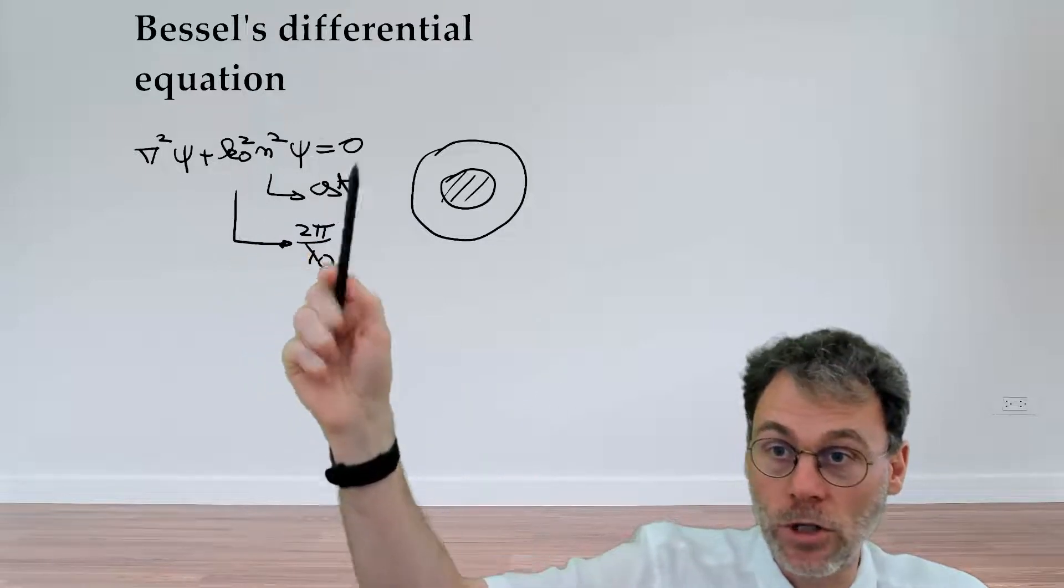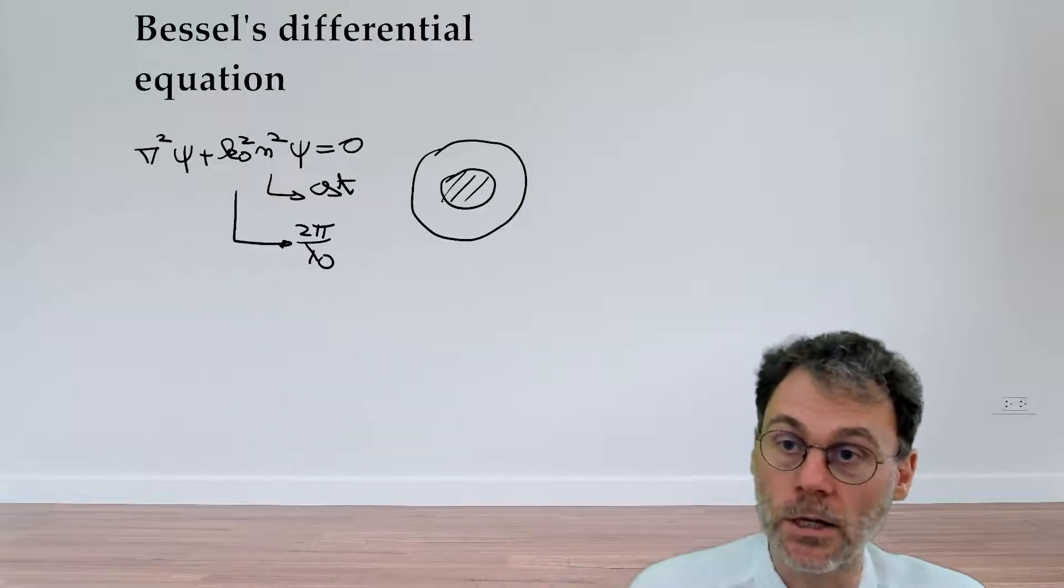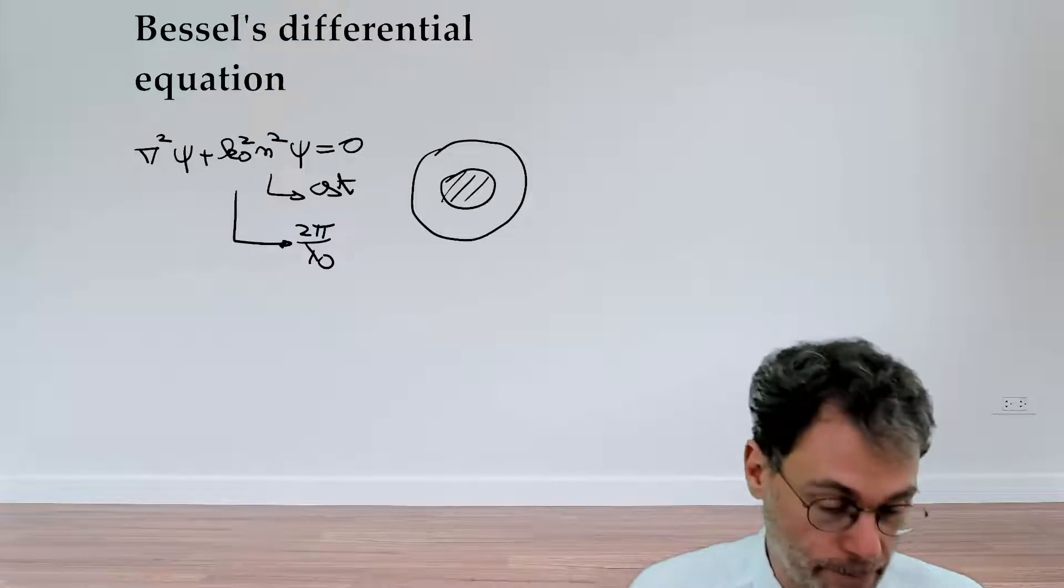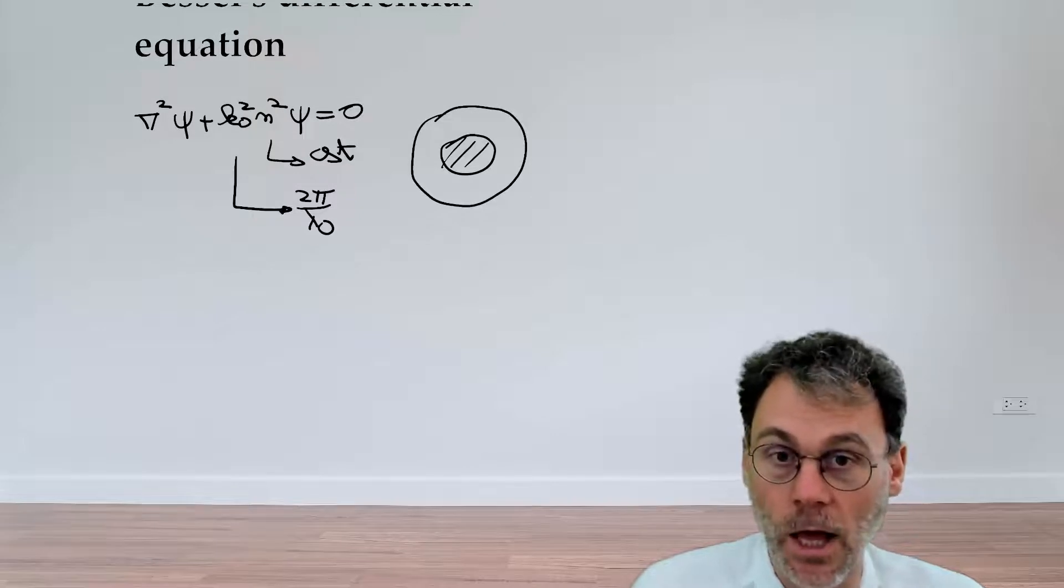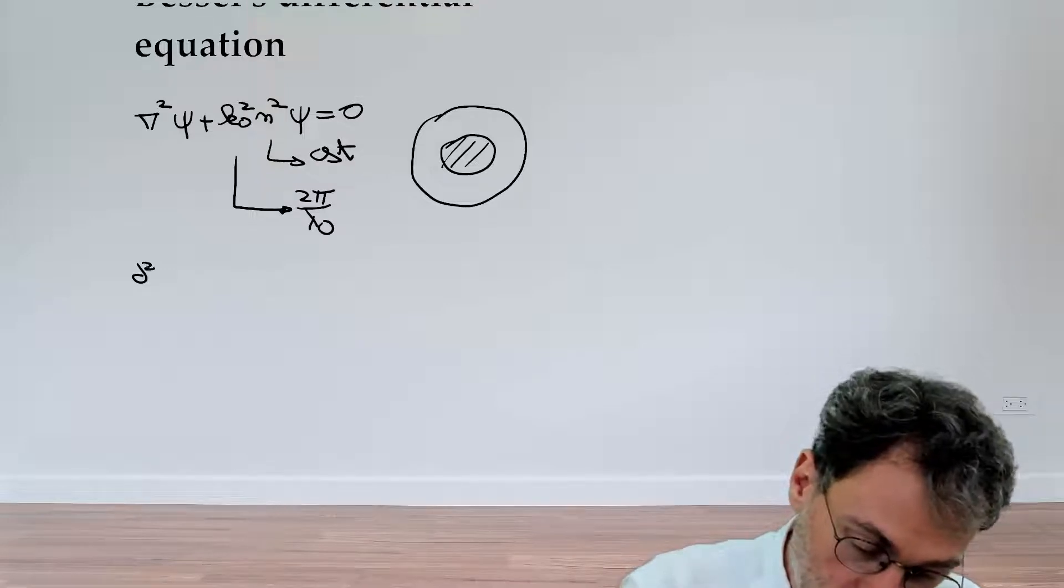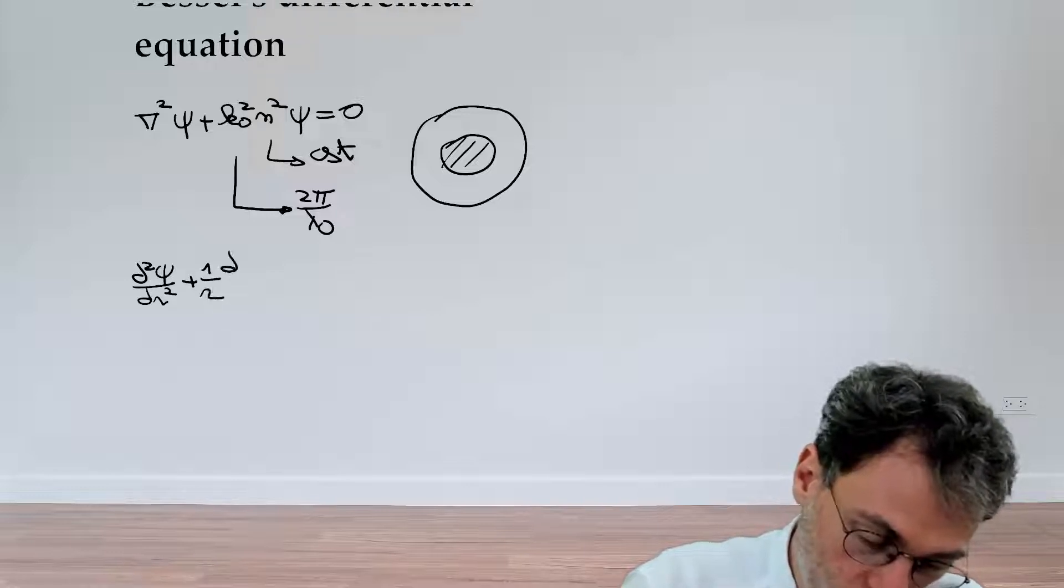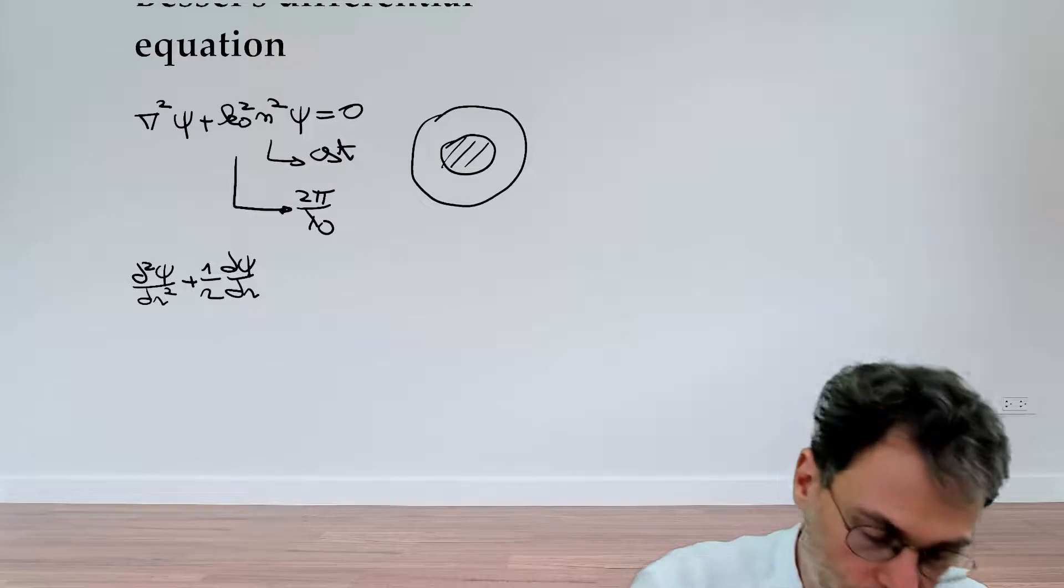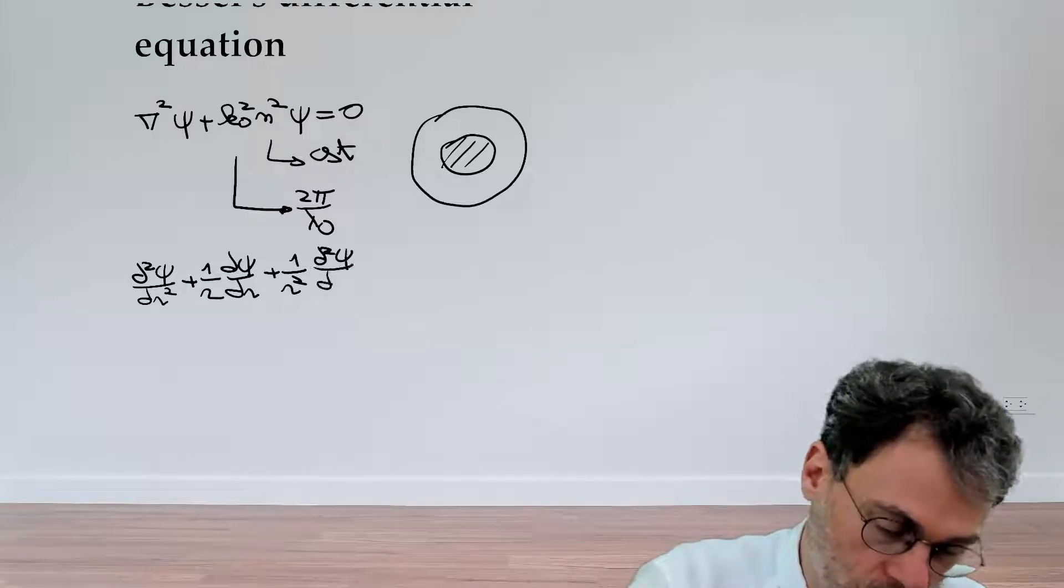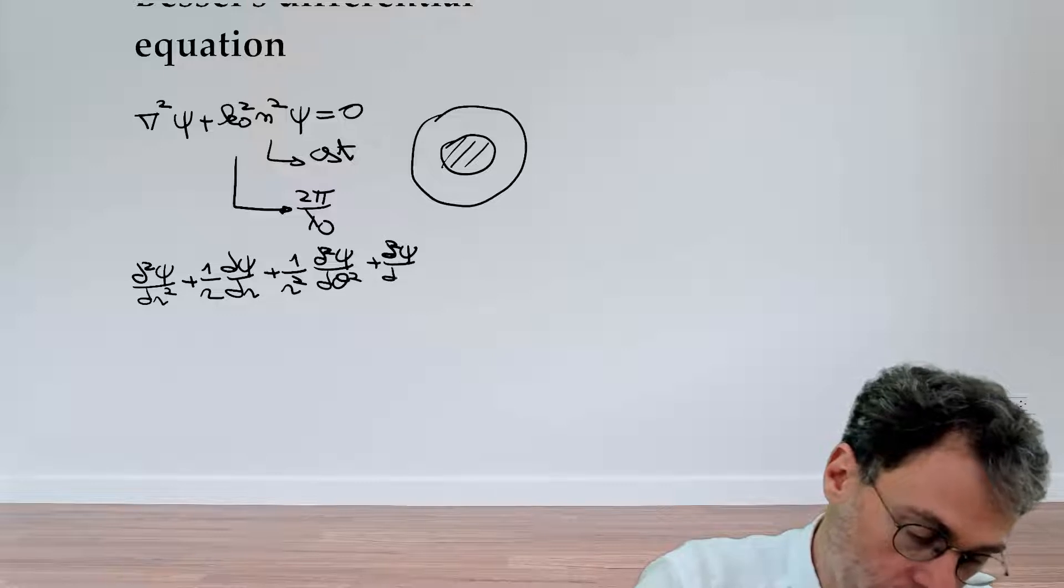Let's see what this equation looks like if we translate it into cylindrical coordinates. Obviously the thing to watch out for is the Laplacian. Go back to one of your books on vector calculus, and that will tell you the form of the Laplacian in cylindrical coordinates. It's the second derivative of ψ with respect to r, 1 over r dψ/dr, then 1 over r², second order derivative with respect to angle θ.